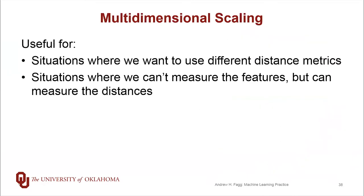So multidimensional scaling, then, it's useful for scenarios where we want to be able to use distance metrics that are different than Euclidean metrics. And again, Euclidean metrics are at the heart of a lot of our machine learning algorithms. Multidimensional scaling is also useful when we can't really measure the features, but we can measure the distances between samples.